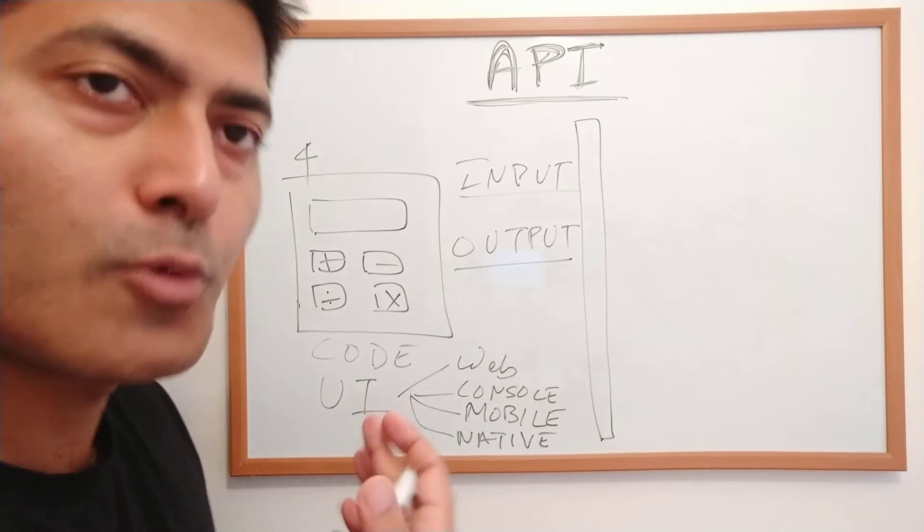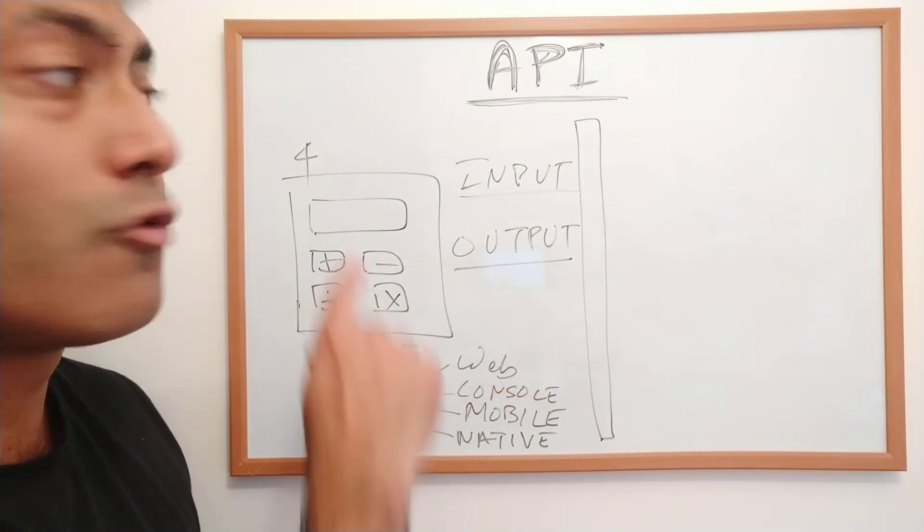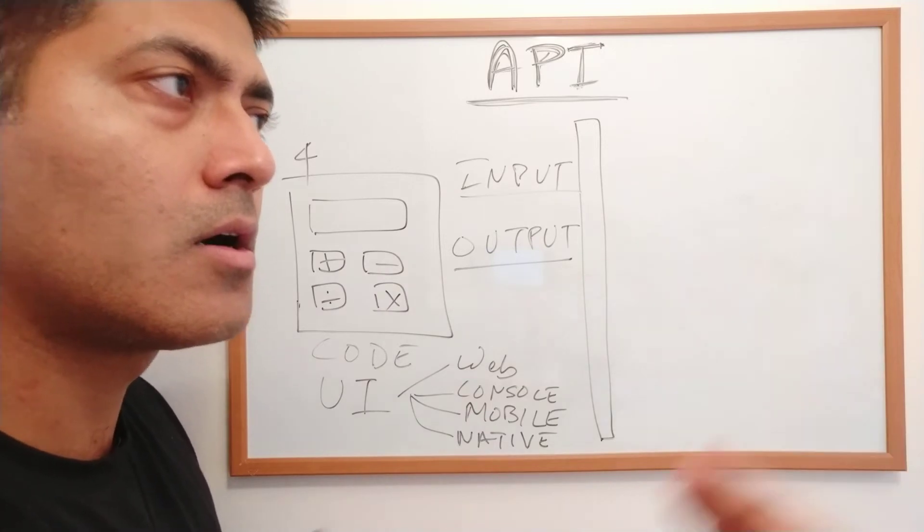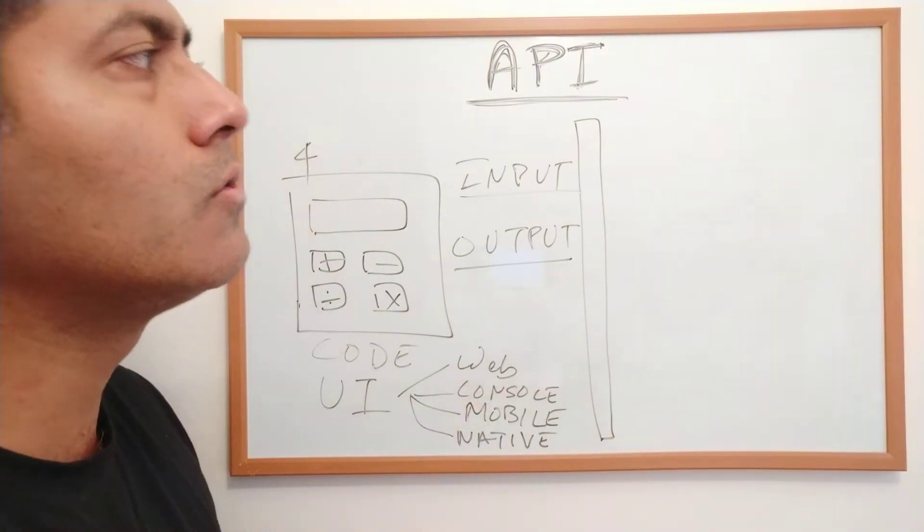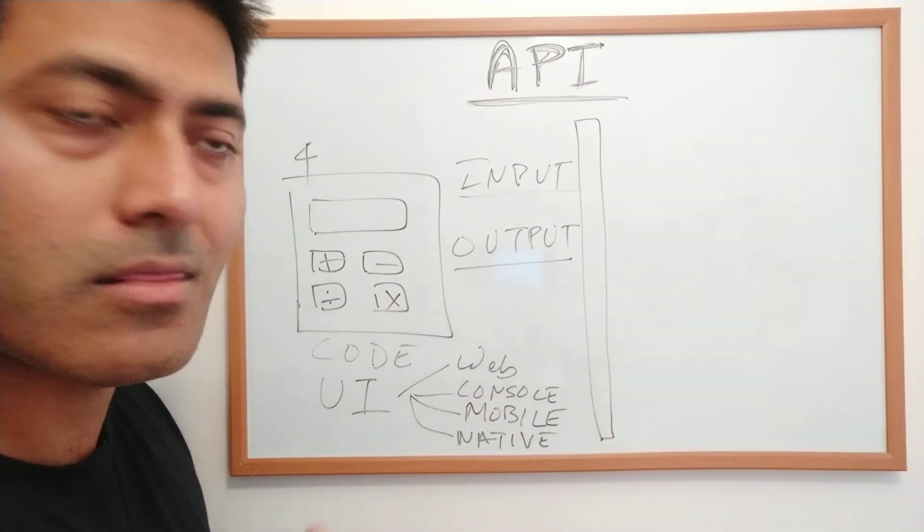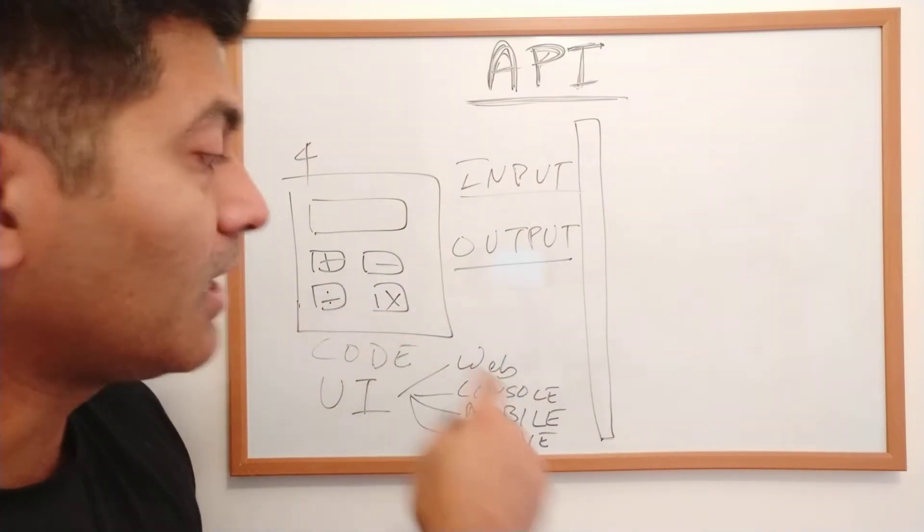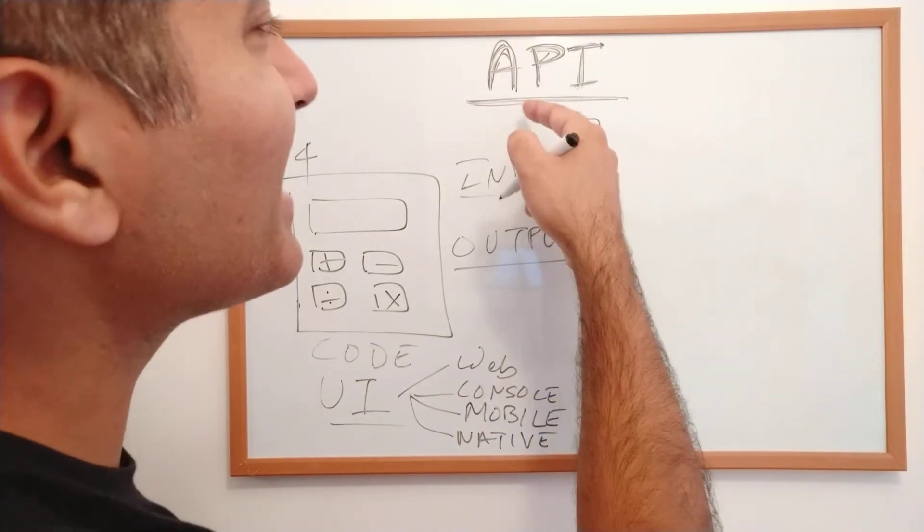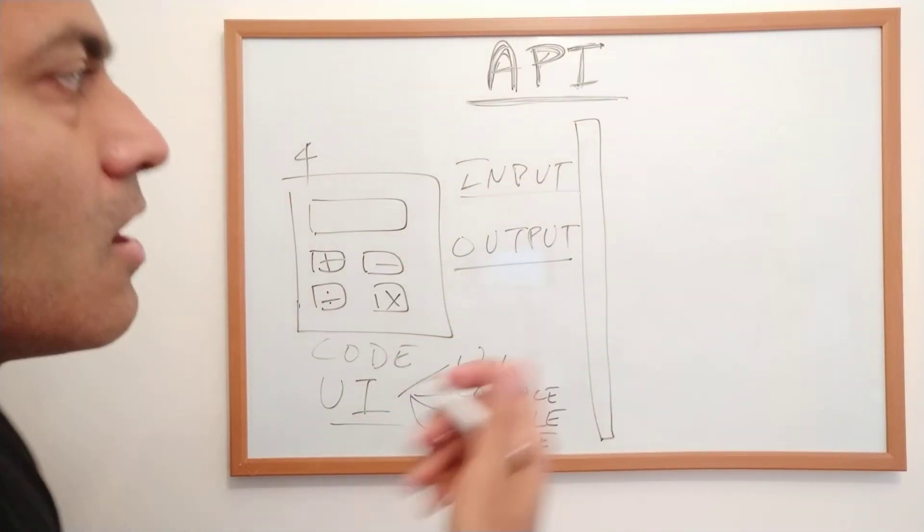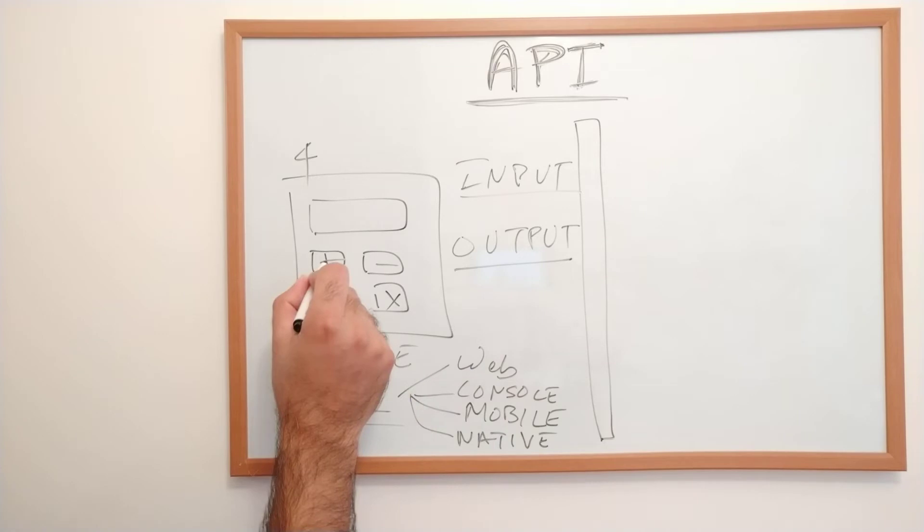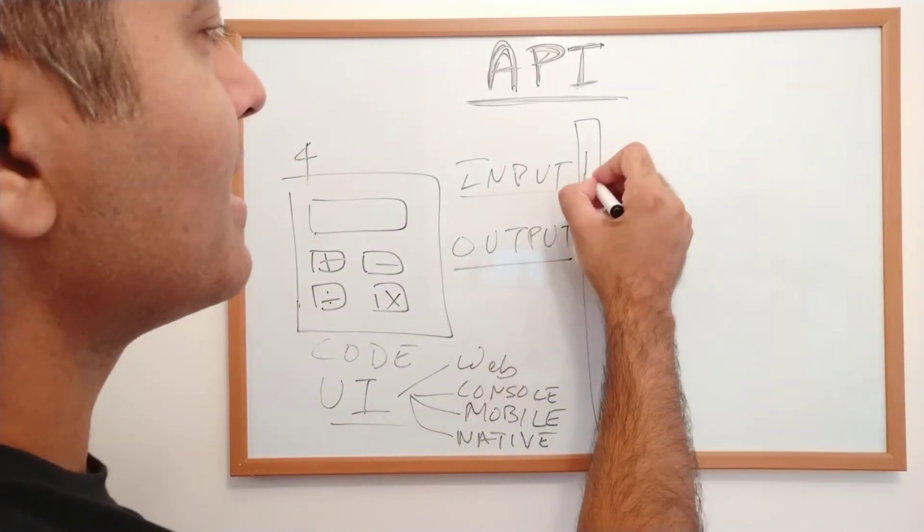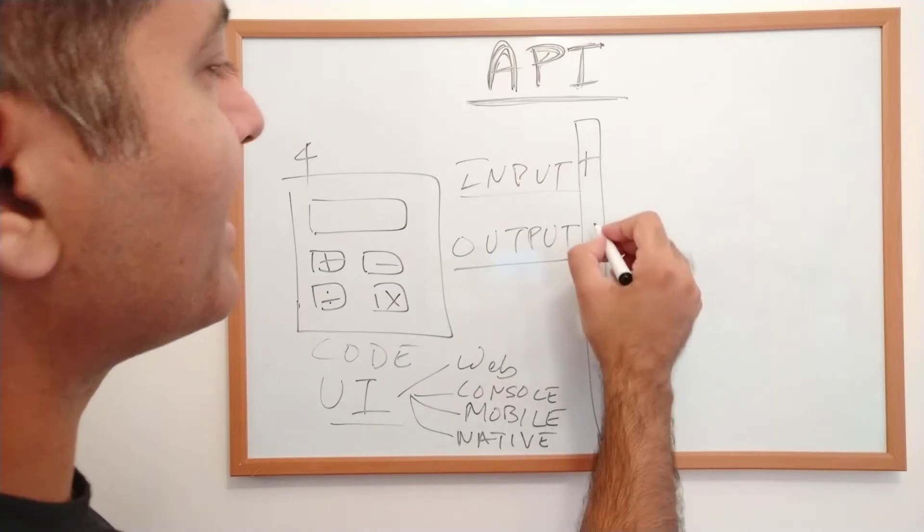Now, if you want to expose these four functionalities to external services, you want to open up access to your application logic without using the UI you created. With the help of an API, you can expose some of these functions to the external world. For example, you could expose addition and division.